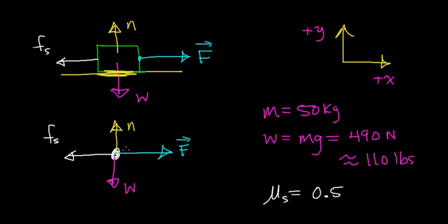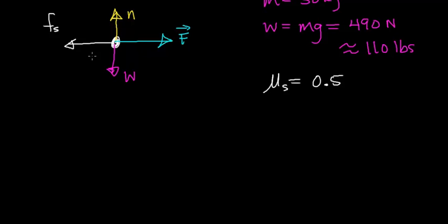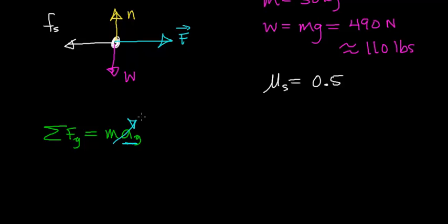The first thing we need to do is figure out what the normal force acting on this object is. To do that, we're going to use Newton's second law. When we add up all the forces in the y direction, it equals the mass times the acceleration in the y direction. This object is not being lifted up off the floor, so the acceleration in the y direction is zero, meaning all the forces in the y direction add up to be zero.